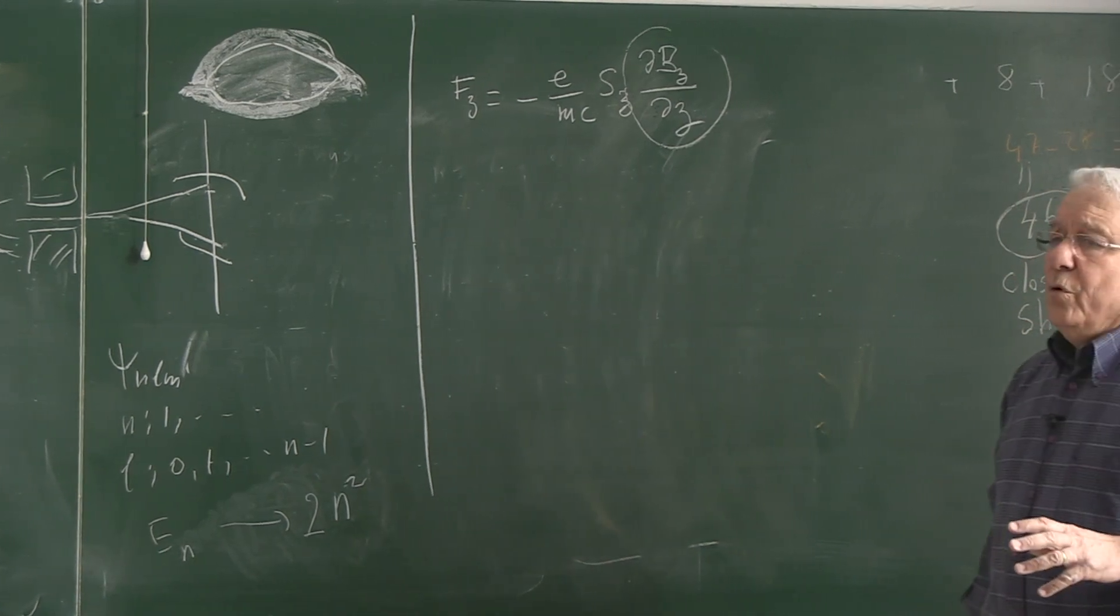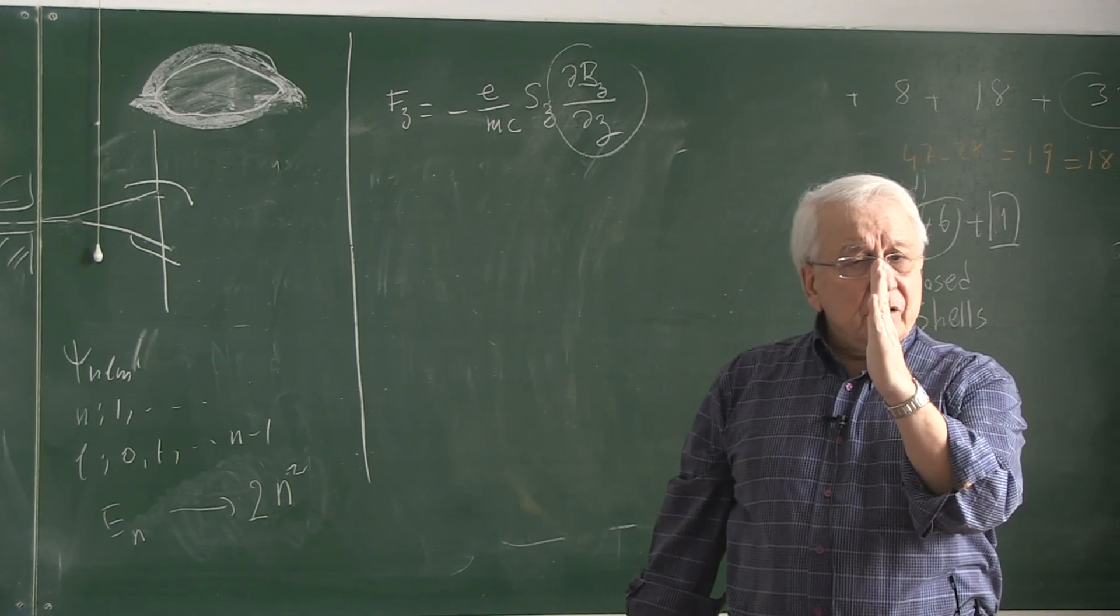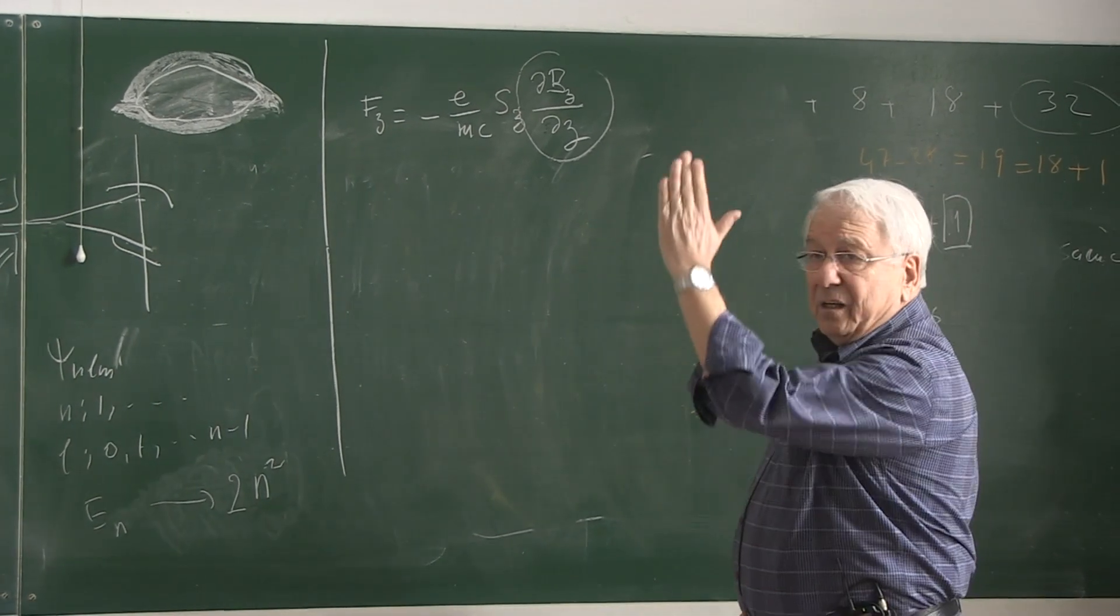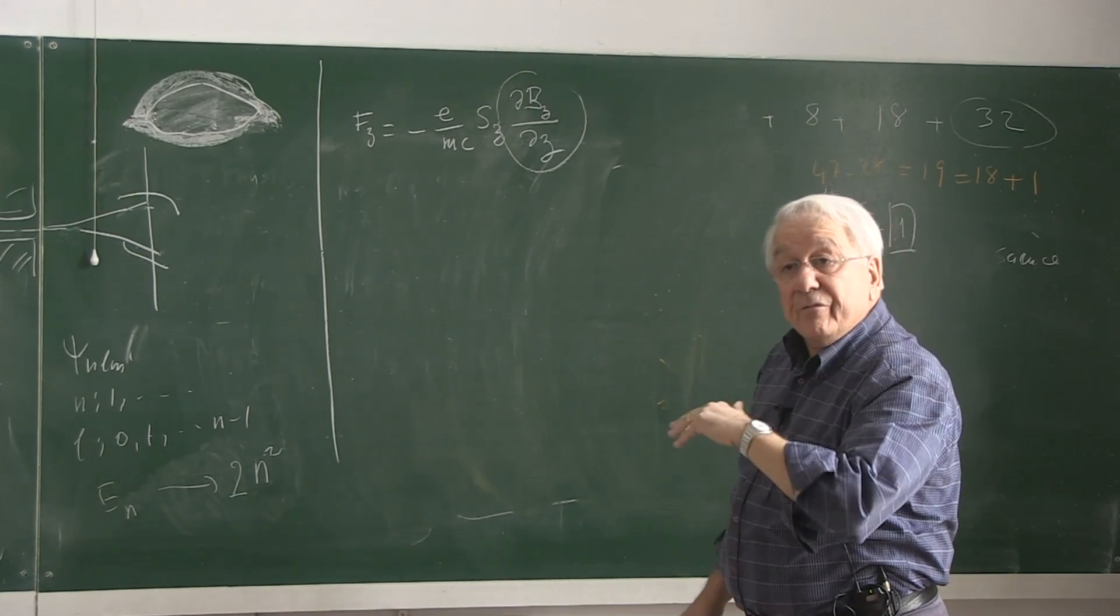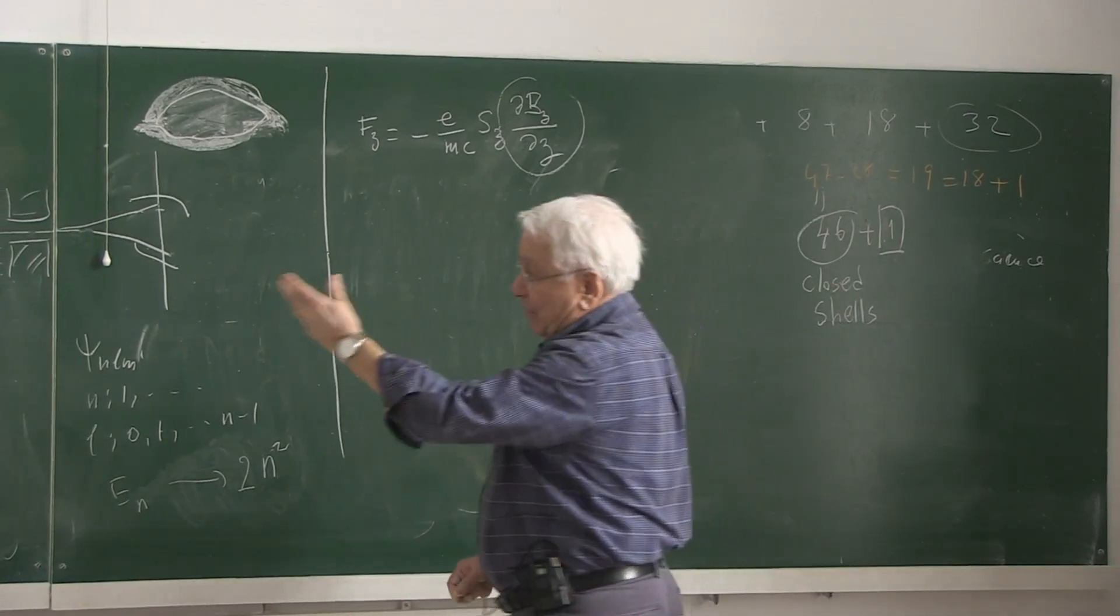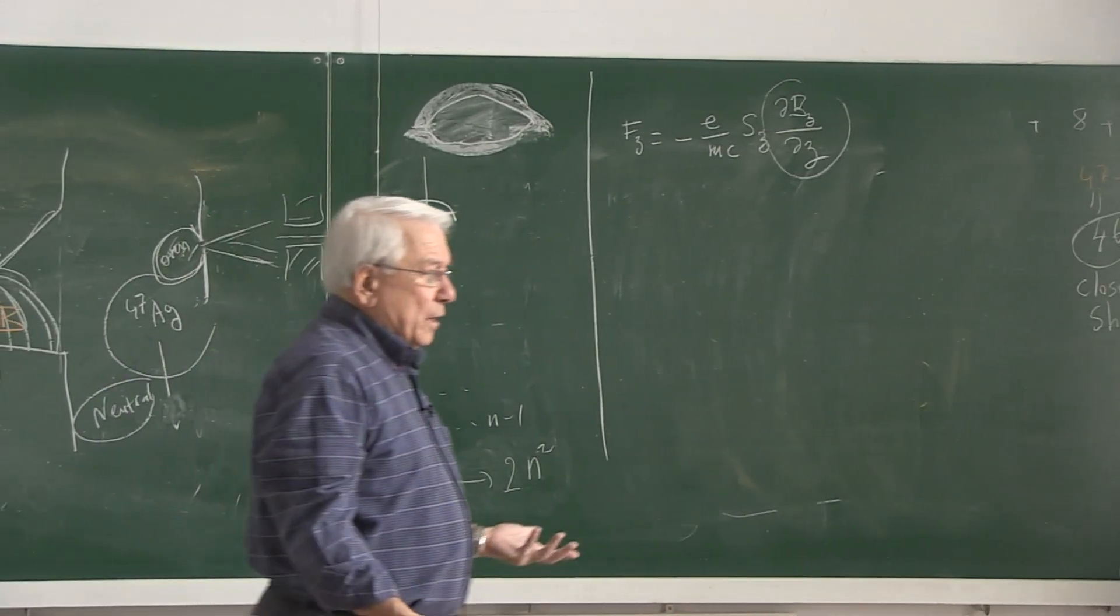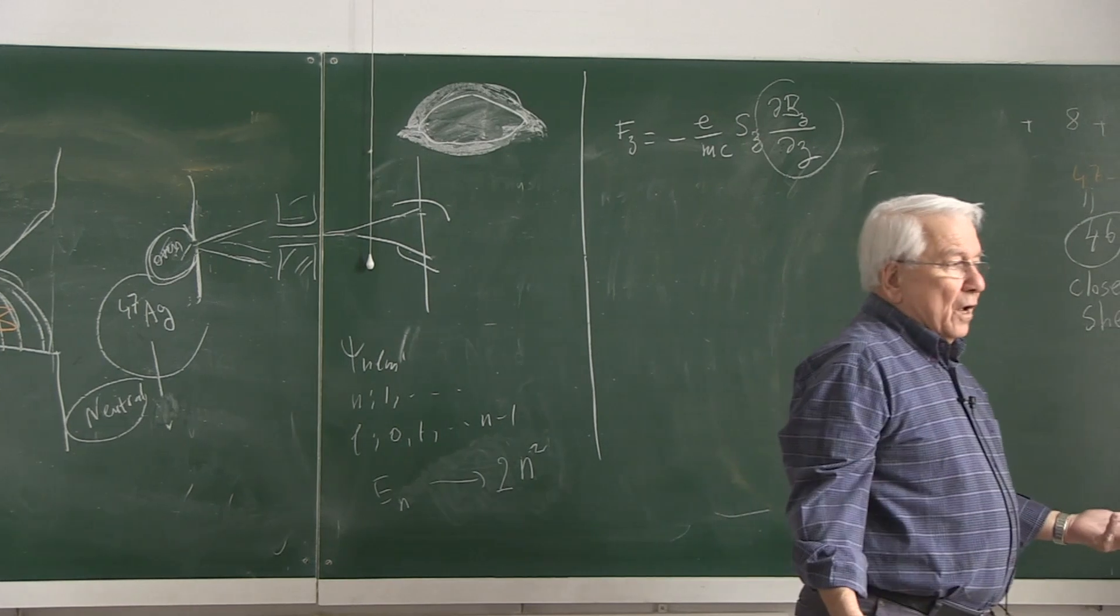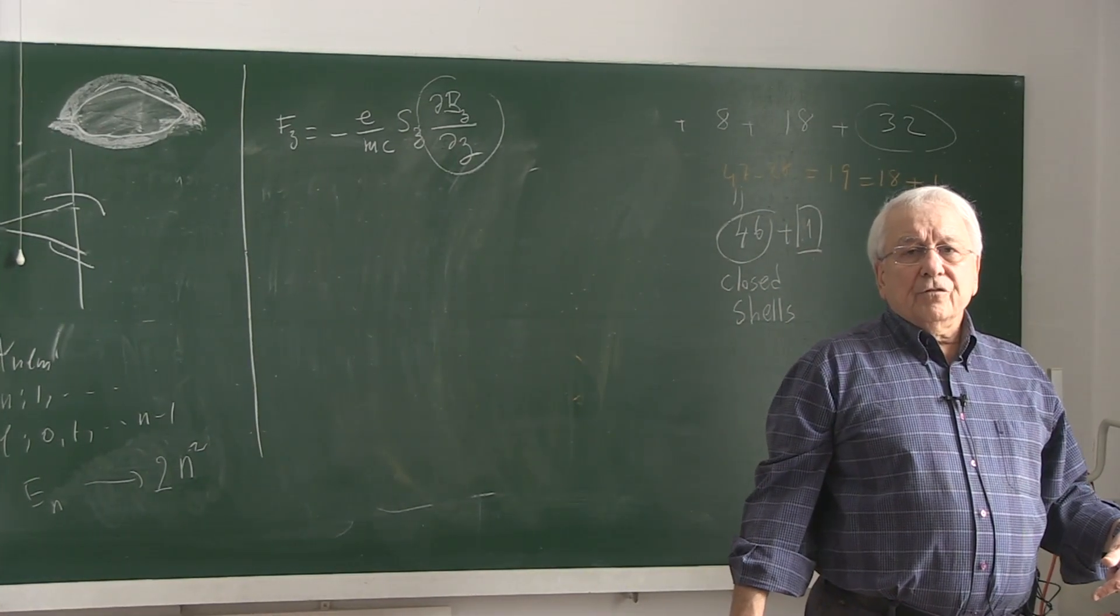But you just have that trace and that trace, meaning that there are two projections, two components. Part of the atoms are aligned along the B magnetic field and part of it, half and half, in the down. Because if they are randomly oriented, half of them are oriented along the up, half of them aligned along the down direction.